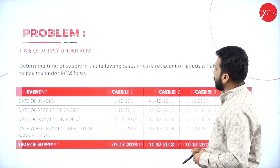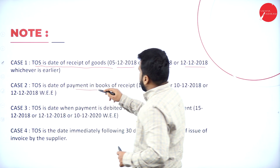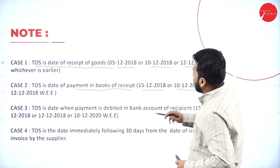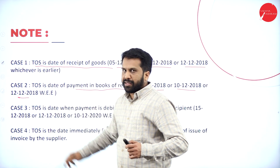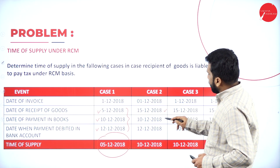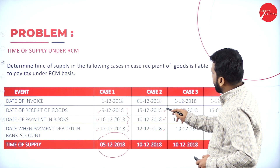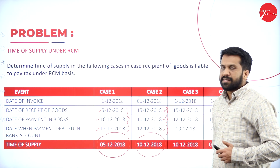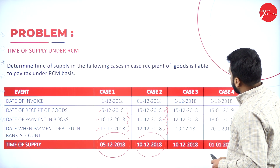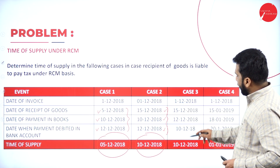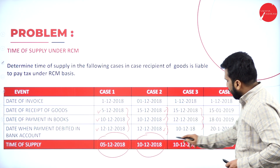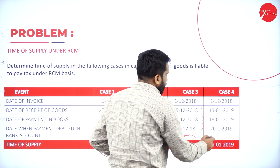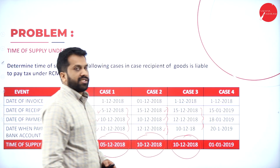For Case 2: the time of supply is the date of payment in the books of the recipient. We compare 15-12, 10-12, and 12-12 — 10-12 is earlier, so the time of supply is 10th December. For Case 3: we compare 15-12 and 10-12 — 10-12 is again the time of supply.